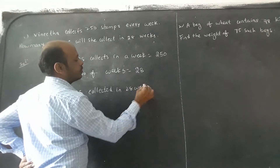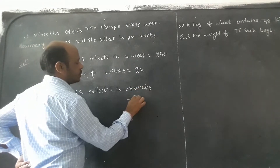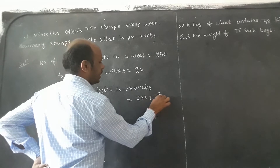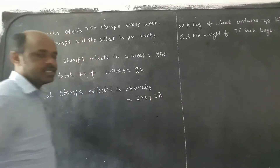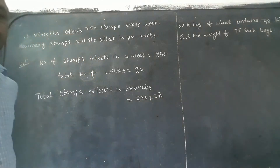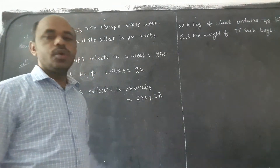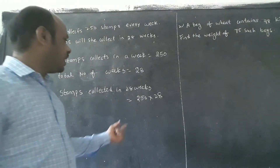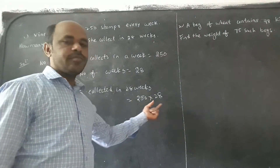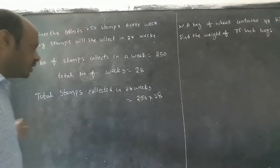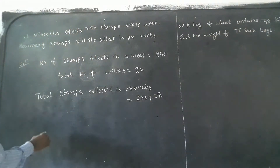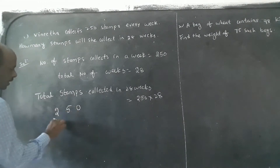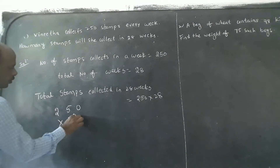What we have to do? Multiplication: 250 into 28. This is a three digit number into two digit number multiplication. So we calculate 250 into 28.